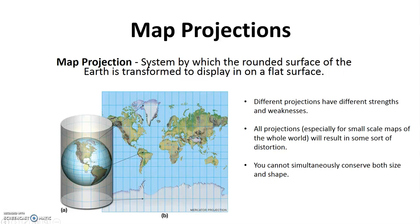Our next topic is map projections. As mentioned previously, it is impossible to take the curved surface of the earth and portray it completely accurately on a flat piece of paper. So maps, especially small-scale maps of the entire world, have inherent flaws — that means they have distortions. Small-scale world maps cannot simultaneously maintain proper size and proper shape. Thus mapmakers are faced with the challenge of trying to minimize distortion so that any distortion present does not impact the ability of the map to fulfill its purpose.